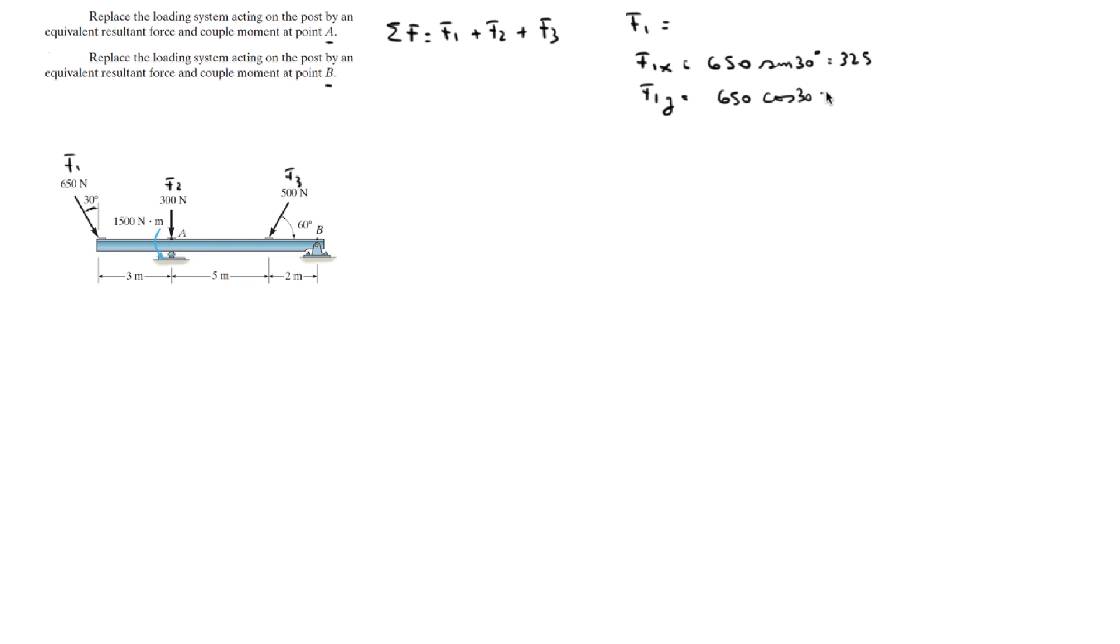Therefore, the Cartesian vector form of F1 is equal to 325i minus 562.9j. F2 is simple because it's going straight down, so it's negative 300j.